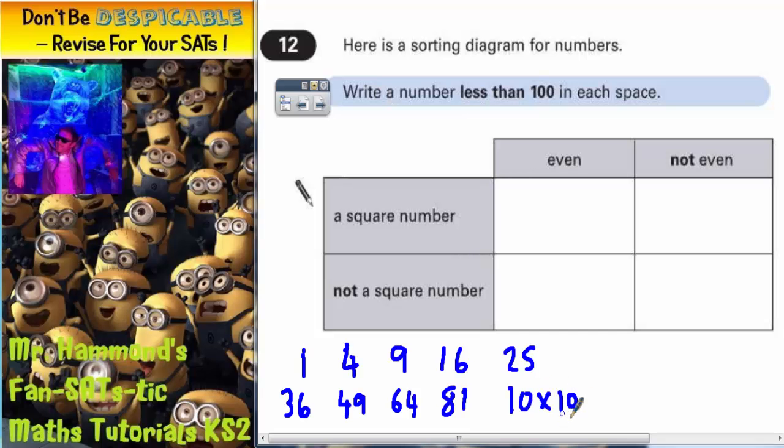We could keep going but there's absolutely no point because we've been asked for numbers less than 100. And 10 times 10, which is 100, isn't less than 100. So we can stop at 10 times 10.